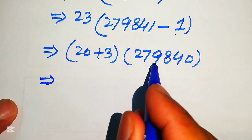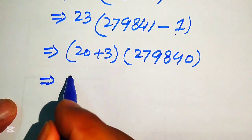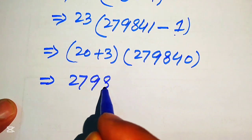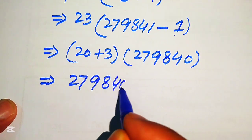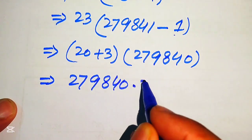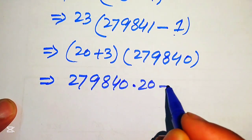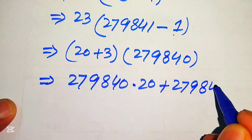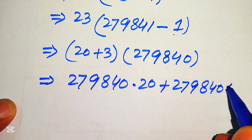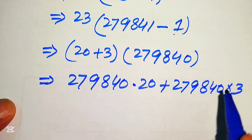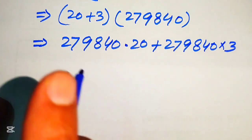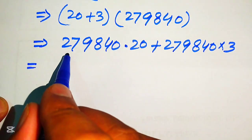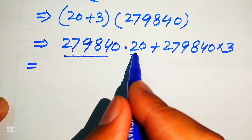We write 279840 multiplied by 20, plus 279840 multiplied by 3, distributing 23 across the two parts of the multiplication.